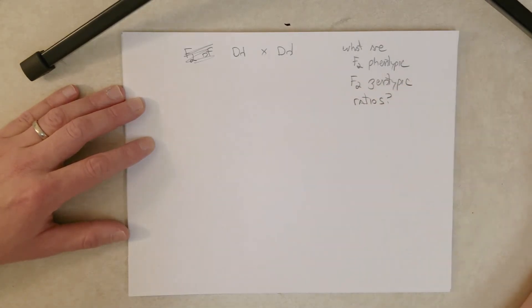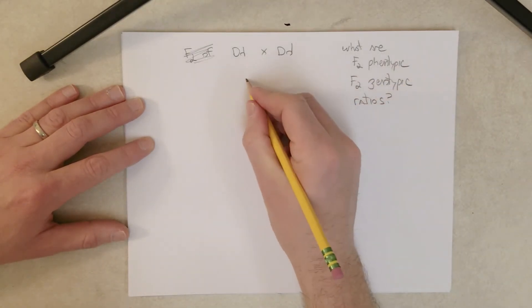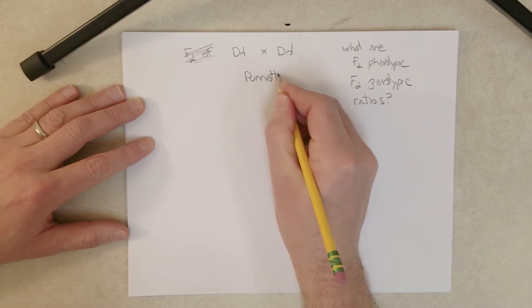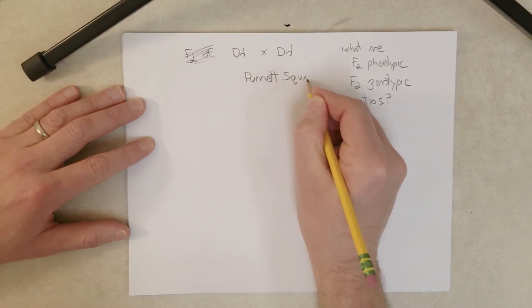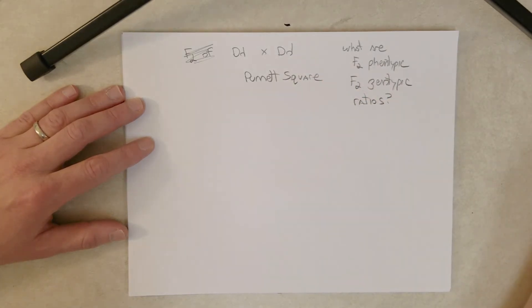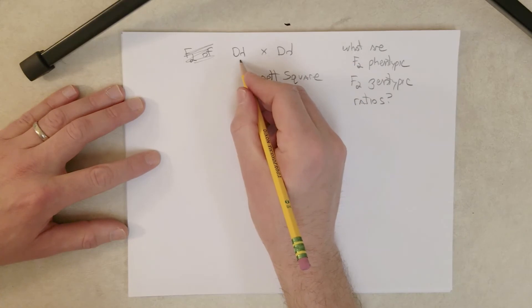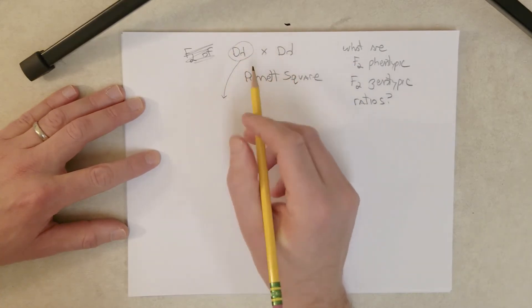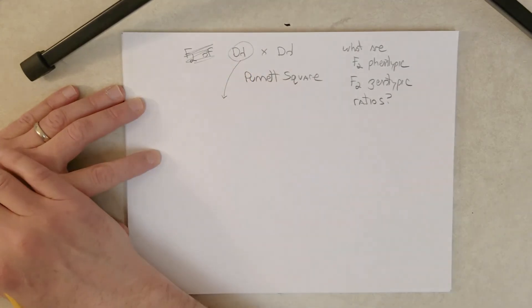Well, this is where we can use what we call a Punnett square, named after Reginald Punnett, I think in the early 1900s. Now what you need to do is look at each genotype of each parent and determine how many different genotypically distinct gametes can be produced.